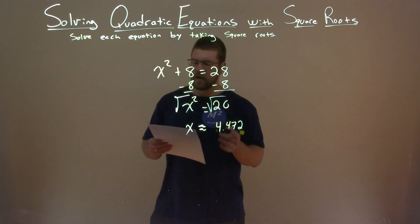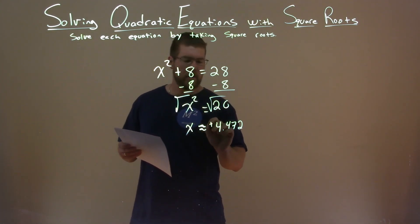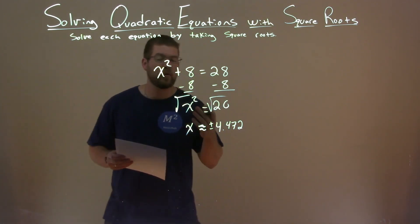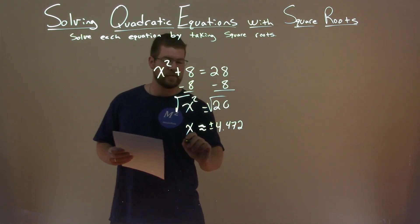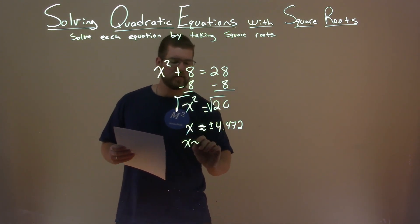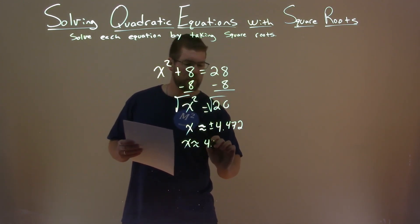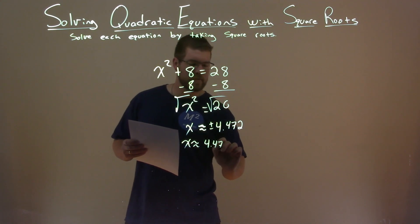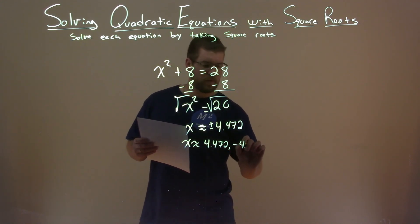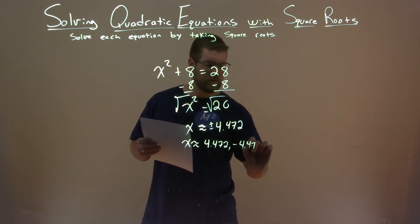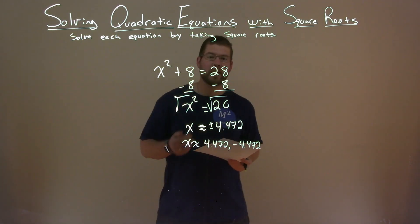But be careful — we also have to do plus and minus here. Both the positive and negative values of x are 4.472. So x is approximately 4.472 and negative 4.472. There we have our final answer.